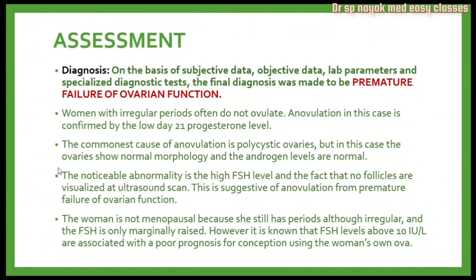Assessment: the final diagnosis, based on subjective data, objective data, lab parameters, and specialized diagnostic tests, was premature failure of ovarian function. Women with irregular periods often do not ovulate, and anovulation is confirmed by the low day 21 progesterone level. The commonest cause of anovulation is polycystic ovaries, but in this case the ovaries show normal morphology and androgen levels are normal. If this patient had polycystic ovarian syndrome, androgen levels would be high and ovarian cysts would be visible on ultrasound, but the patient had normal ovarian morphology, making PCOS an unlikely cause.